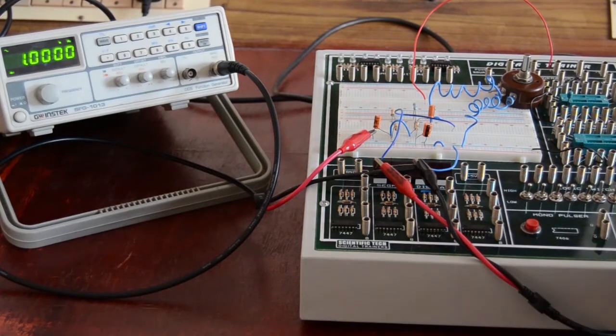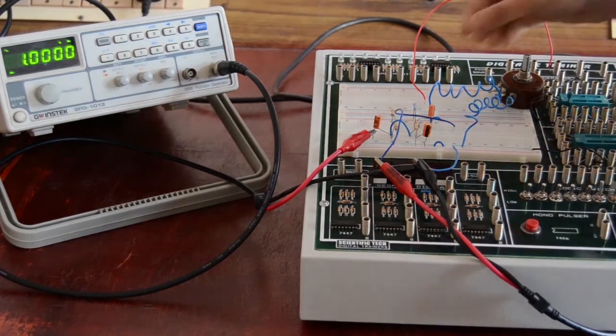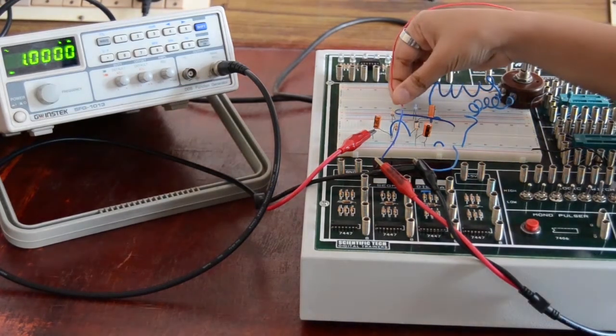Now, let me demonstrate the circuit of RC Coupled Amplifier. This is the circuit assembled on the breadboard. VCC of 12V is provided.